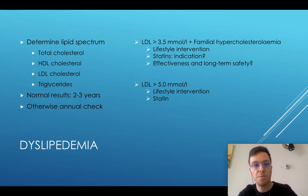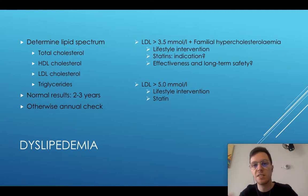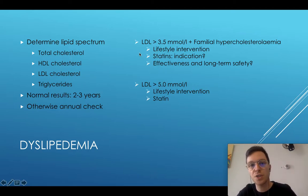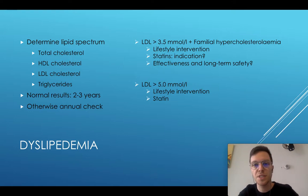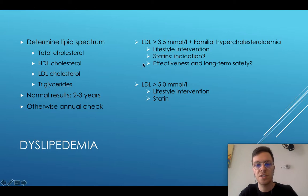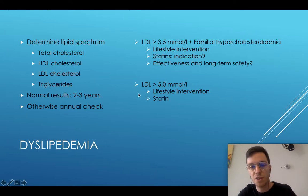Then you should screen for dyslipidemia. You do this by a full lipid spectrum — you test total cholesterol, HDL, LDL, and triglycerides. When results are normal, repeat this every two to three years as long as the child is still obese; otherwise when there are deviations, do an annual check. If the LDL is more than 3.5 and there is familial hypercholesterolemia, start lifestyle interventions — healthy food, good exercise — but starting statins is uncertain as there hasn't been enough research on effectiveness and long-term safety in this age group. If the LDL is however higher than 5.0, you should start lifestyle interventions and statins because it's proven to help.